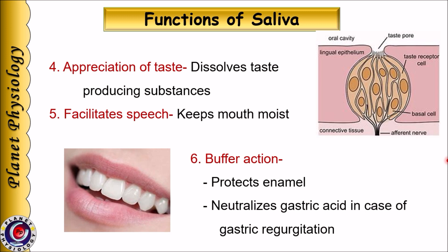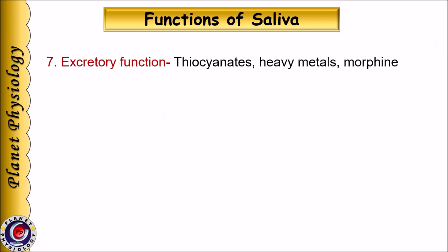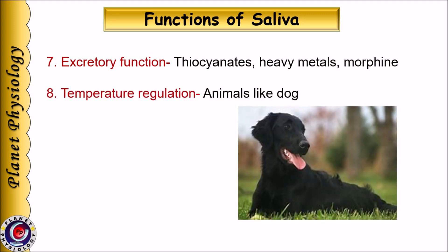Bicarbonates act as a buffer and help maintain near-neutral pH in saliva, protecting tooth enamel. Enamel gets digested in acidic pH, and hence oral infections or consumption of cola-based soft drinks lead to loss of enamel, weakening the teeth. The buffer action of bicarbonate also helps to neutralize gastric acid in case of gastric regurgitation. Saliva acts as an excretory medium for various substances like thiocyanate ions, heavy metals, morphine, and certain drugs. It also helps in temperature regulation in animals like dogs — panting during summer helps dissipate heat from the surface of the tongue.